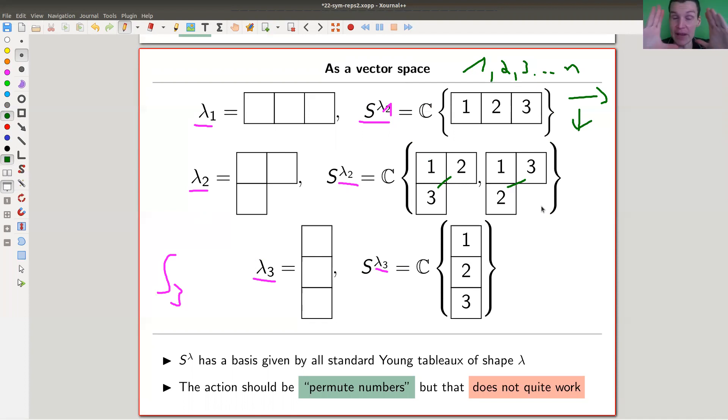The standard tableau is just the filling with numbers one, two, three—in general up to n—non-repeating, such that they increase along rows and columns. So I have a two-dimensional vector space. I've defined an abstract vector space with those as basis elements. I should come up with an action. There are numbers somewhere and there's a permutation group, so you better permute numbers. Act on those by permuting numbers.